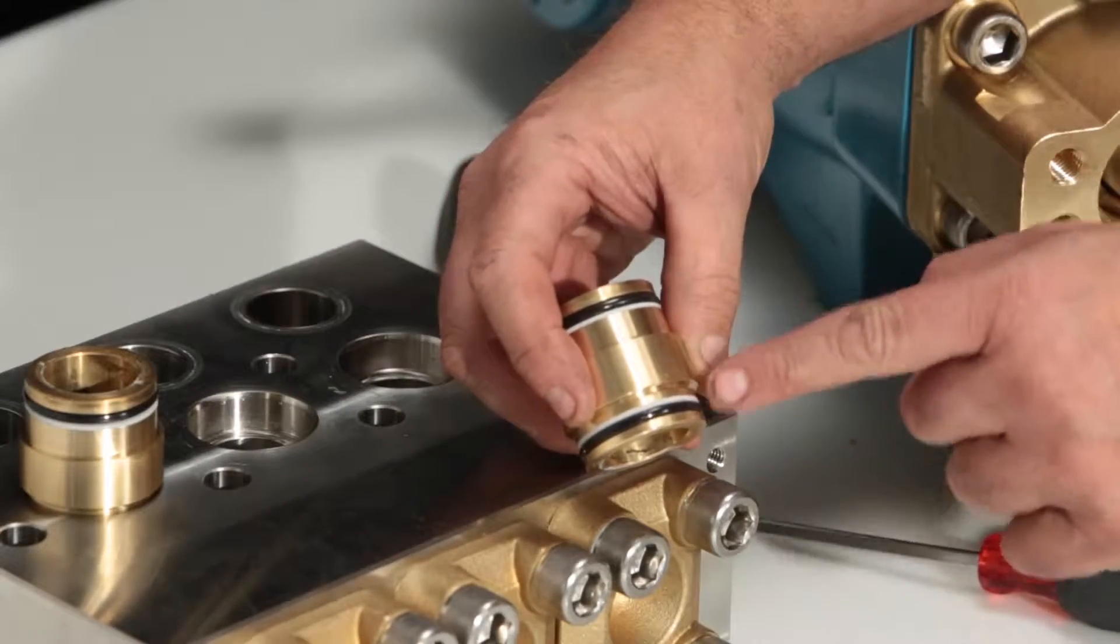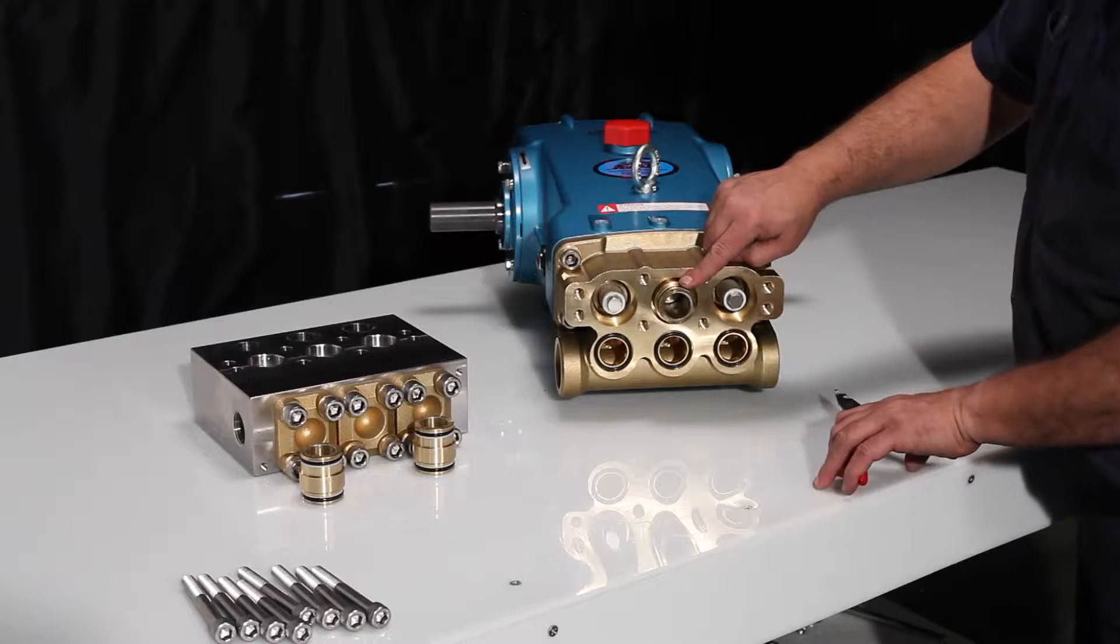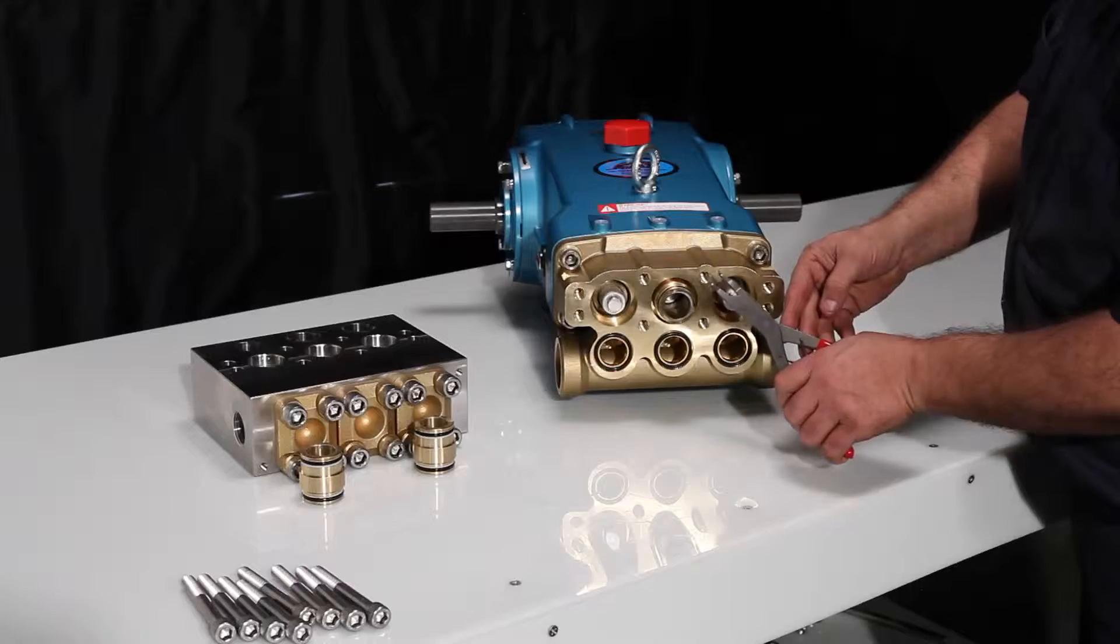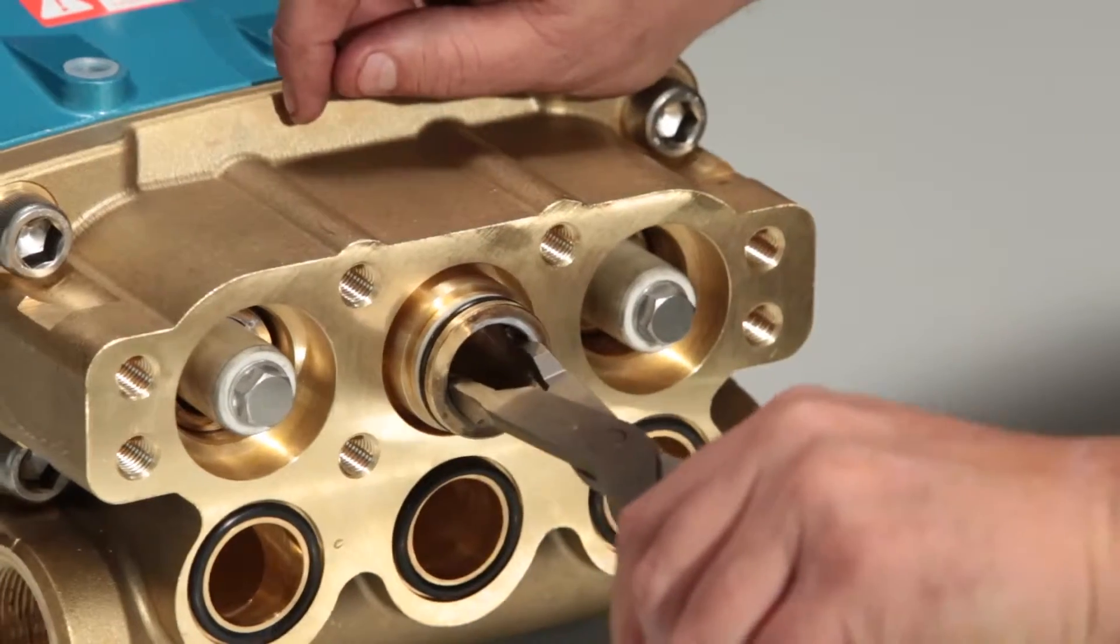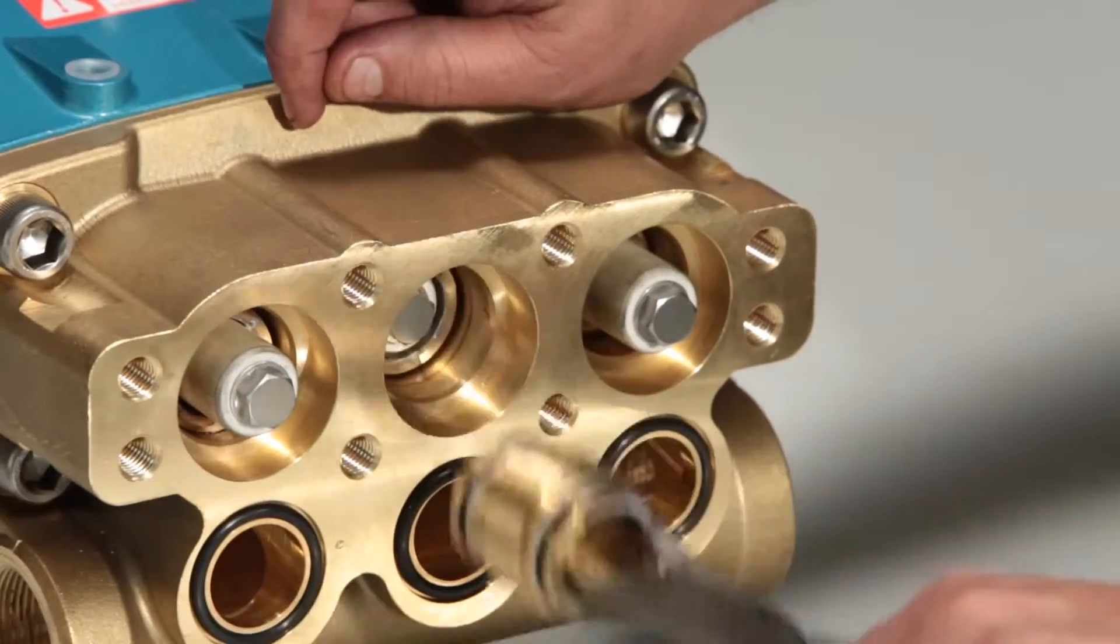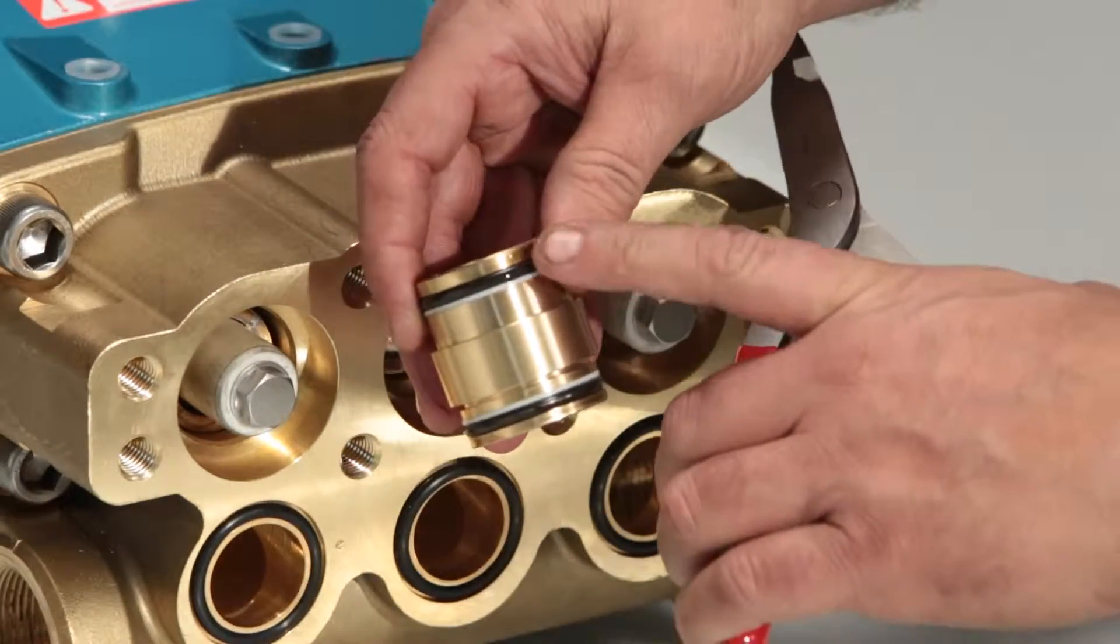Inspect o-ring and backup ring for damage. If the VPacking spacer remained in the inlet manifold, use a reverse pliers and grasp the inside of the adapter, pulling away from the manifold. Inspect o-ring and backup ring for damage.